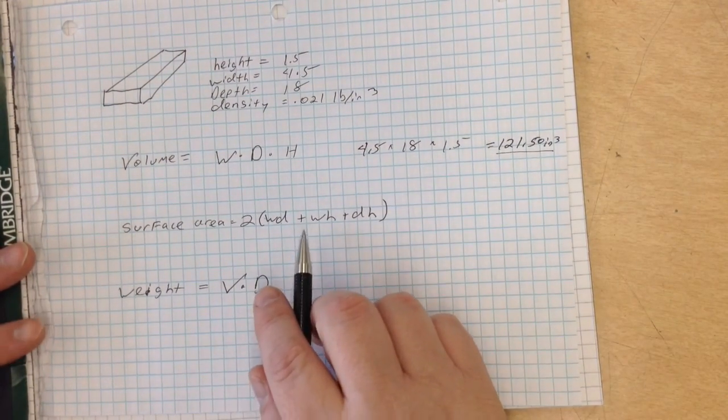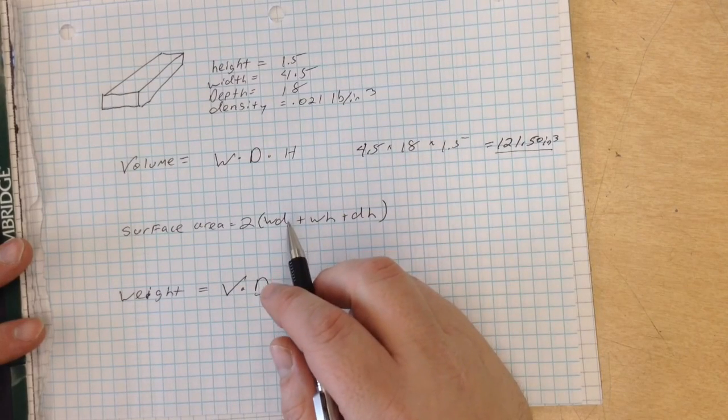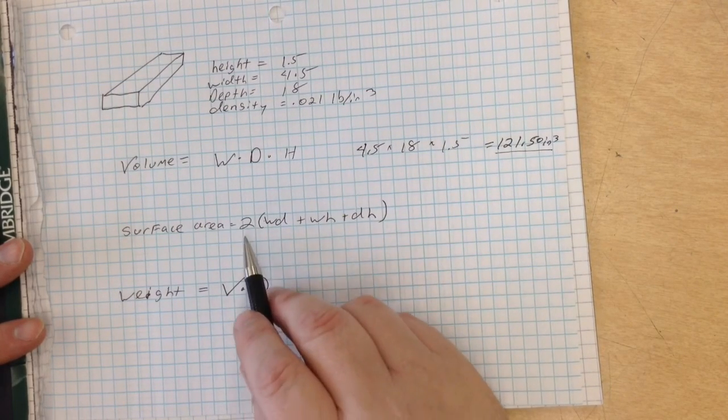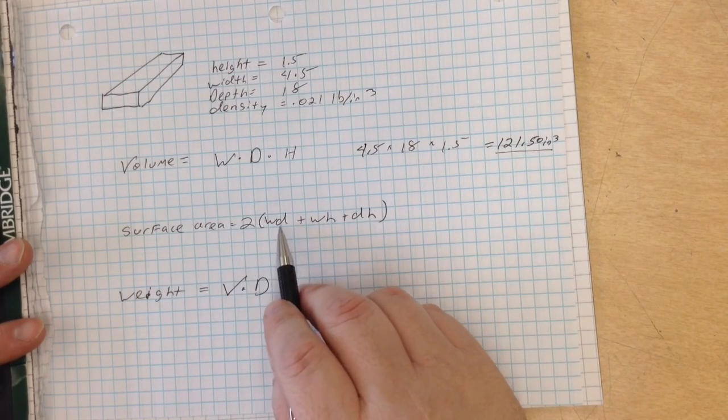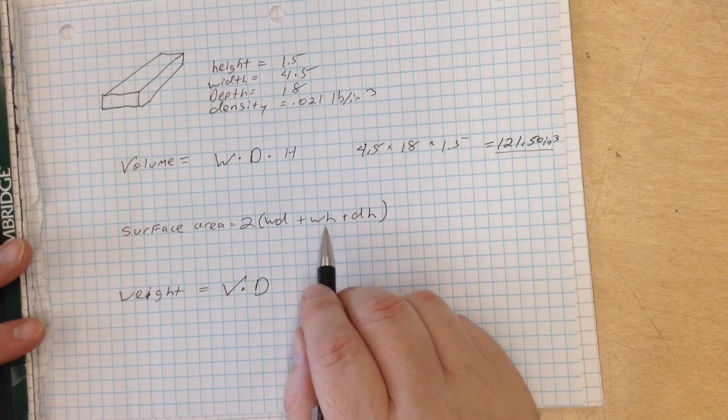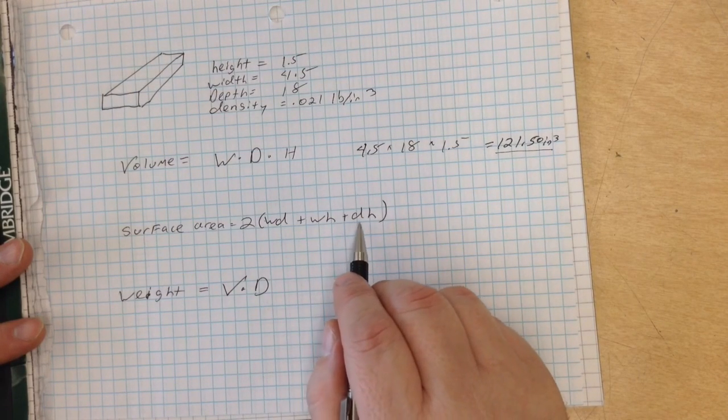Now let's go on and figure out the surface area. The surface area right here is 2 times width times depth, plus width times height, plus depth times height.